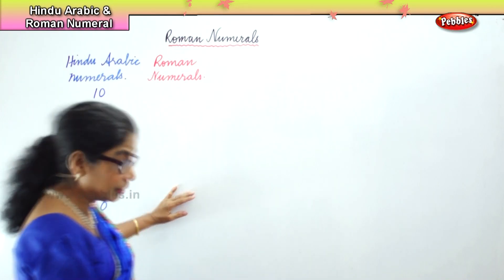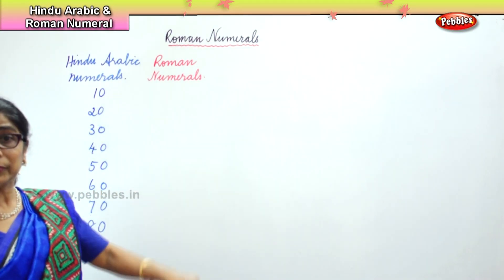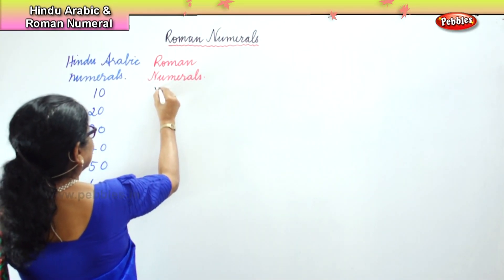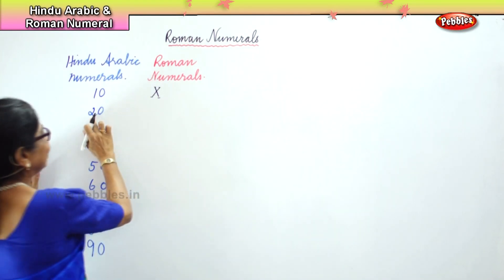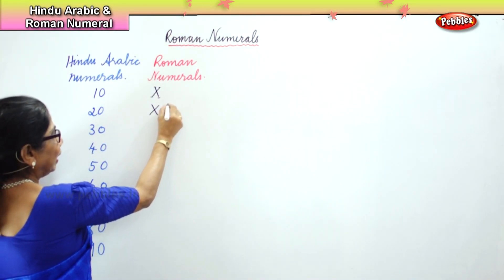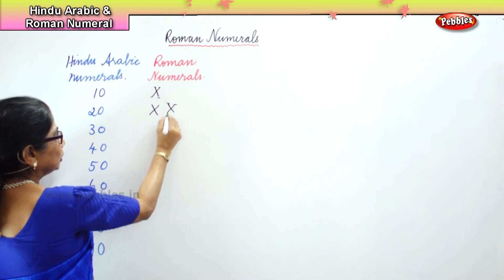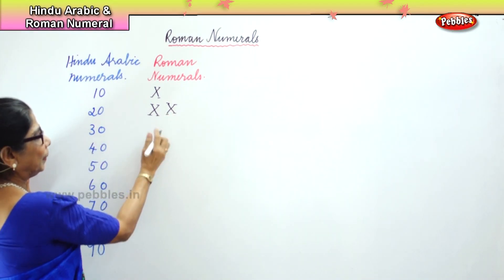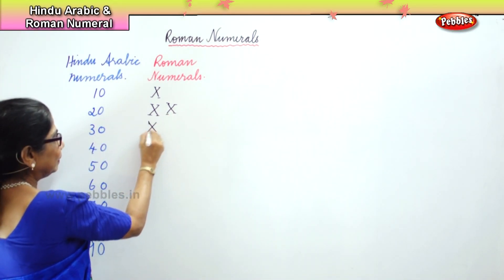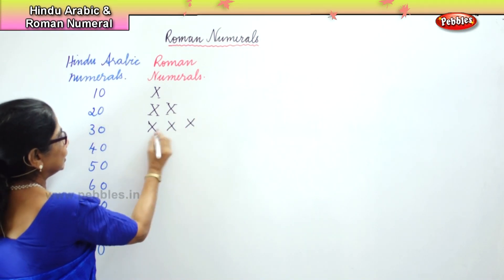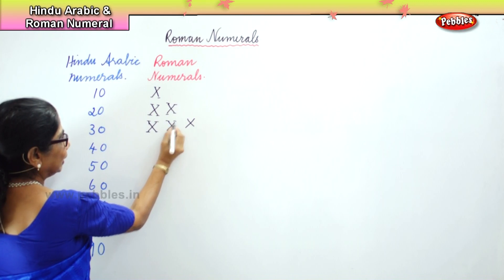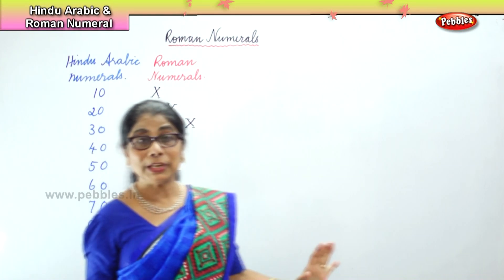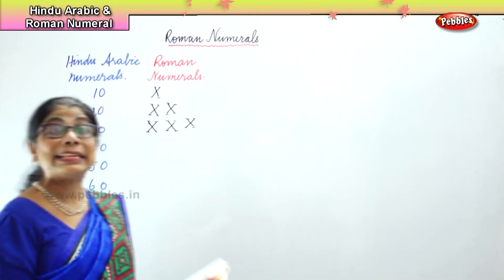Now let's see. First, we already know 10, 20, 30. So 10 goes like this, 20 — you get 2 tens. So now we got 20, and 30 is again repeated. So we learnt 10, 20, 30. We got up to 30. When it comes to 40, there is a difference.